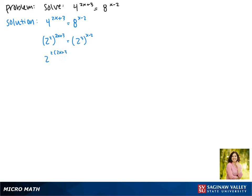When we have a power raised to a power, they multiply, so we can rewrite this exponent as 2 times 2x plus 3. And this exponent we can rewrite as 3 times x minus 2.